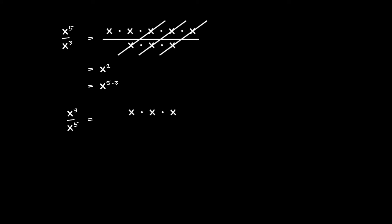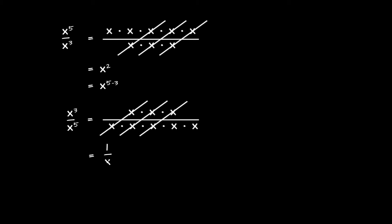Writing things out as before, we now have three copies of x in the numerator and five copies in the denominator. Everything in the numerator cancels with something in the denominator, and after the smoke clears we are left with 1 over x squared. Now, if we try to apply the principle of subtracting exponents, we would have x to the power 3 minus 5, which equals x to the negative 2.